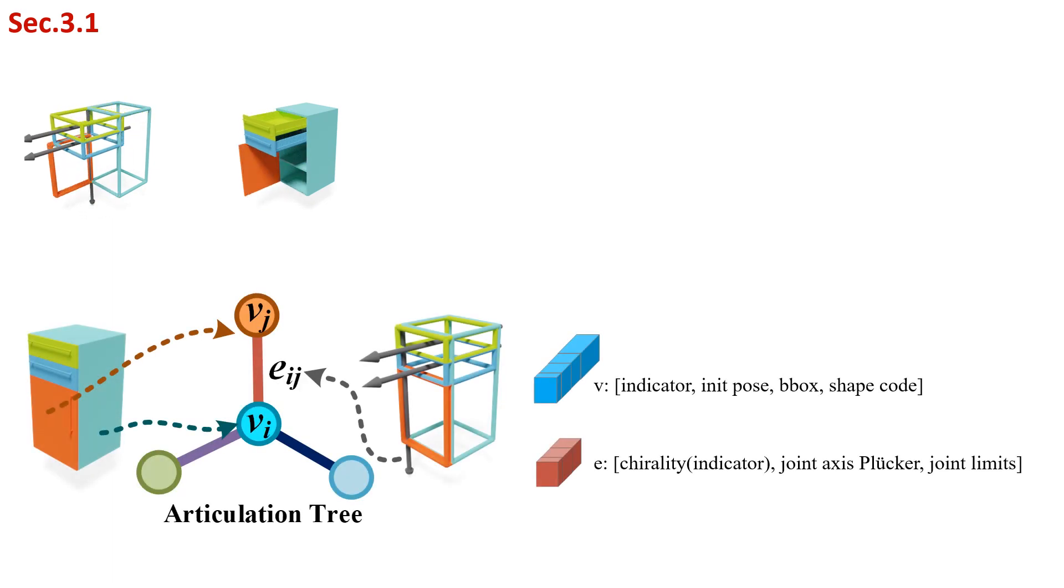This novel task is challenging because the articulated object data are irregular, with different numbers of parts and complex kinematic structures with various joint motion constraints. In order to enable the efficient processing of diverse geometry and structures by a neural architecture, we propose a novel unifying articulation tree or graph parameterization to represent articulated objects. We assume articulated objects have a tree structure with screw joints, which covers most real-world scenarios.